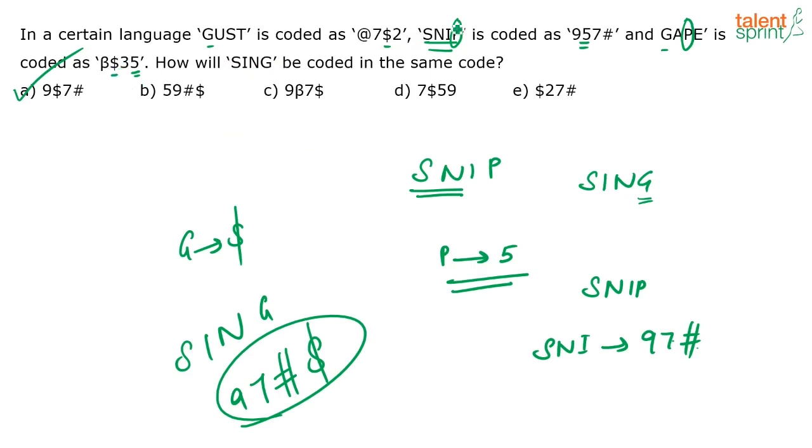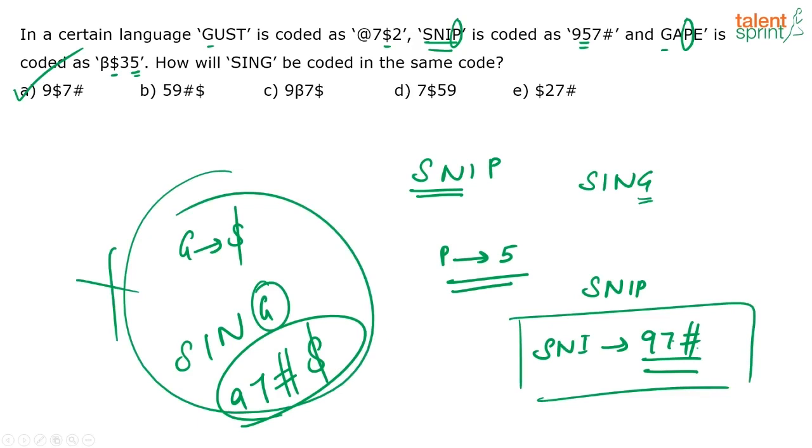Don't waste time actually finding out what is the code for S, what is the code for I. Not required in this question. See, you need the word SING, you have the word SNIP. So, find out the code of P, then you know what are the other numbers that you require. Again, at that point itself, you should get the answer, 9, 7 and hash. When you know that SNI stands for 9, 7 and hash, you needn't even find out what G stands for because there is only one option which has 9, 7 and hash. There is no other option that has that. So, at this point itself, mark the answer. Don't waste your time doing this. This is also not required. Directly at this point, you will get the answer.